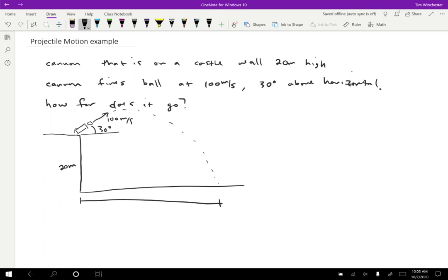So we want to do the same approach that we used in the last example, which is consider the X and Y motion separately and then see what we can figure out from those pieces of information. But this one's a little trickier because the velocity is now no longer just horizontal. So we have to think about what is the horizontal and vertical component of the velocity.